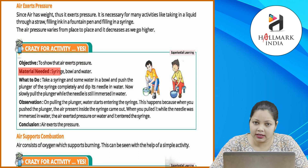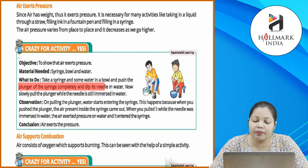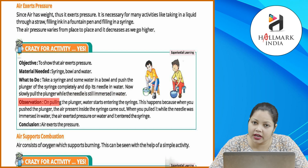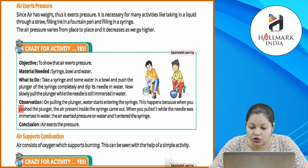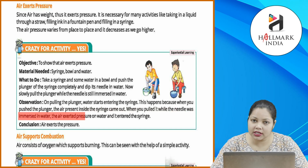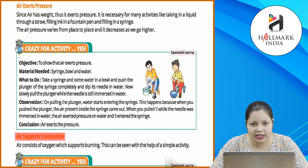Crazy for activity — objective: to show that air exerts pressure. Materials needed: syringe, bowl and water. What to do: take a syringe and water in a bowl, push the plunger of the syringe completely and dip its needle in water. Now slowly pull the plunger while the needle is still immersed in water. Observation: on pulling the plunger, water starts entering the syringe — because when you push the plunger, the air inside comes out, and when you pull it, air exerts pressure on water and it enters the syringe. Conclusion: air exerts pressure.